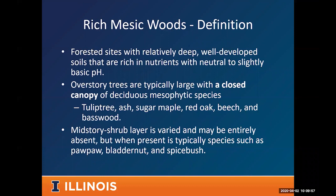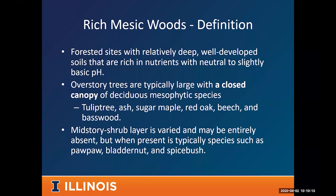These forested sites have relatively deep, well-developed soils that are rich in nutrients, usually neutral or slightly basic pH. They're not the upland oak-hickory forests so common in Illinois — these are closed-canopy sites with deciduous mesophytic species like tulip tree, ash, sugar maple, beech, red oak, and basswood — species that prefer a little moisture and don't burn as well.